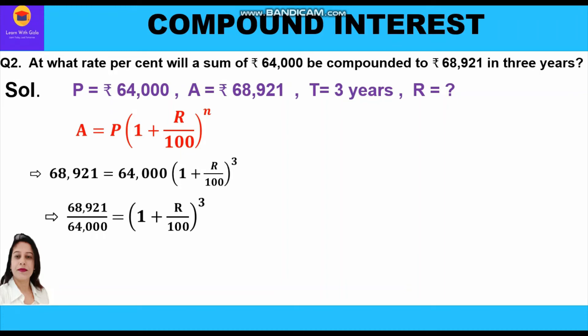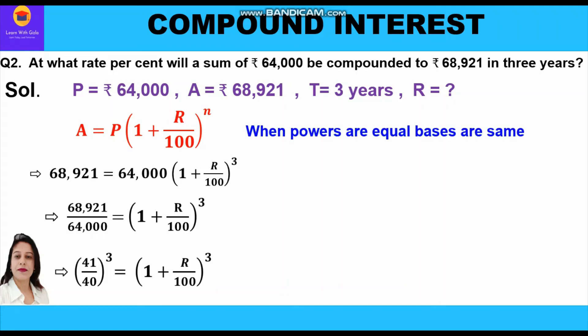Because we have raised to power 3 on the right-hand side, we need power 3 on the left-hand side also. We know that 41 cubed is 68,921 and 40 cubed is 64,000. So we write 41 upon 40 whole cube is equal to 1 plus r upon 100 whole cube. When powers are equal, bases are the same, so we write 41 upon 40 is equal to 1 plus r upon 100.